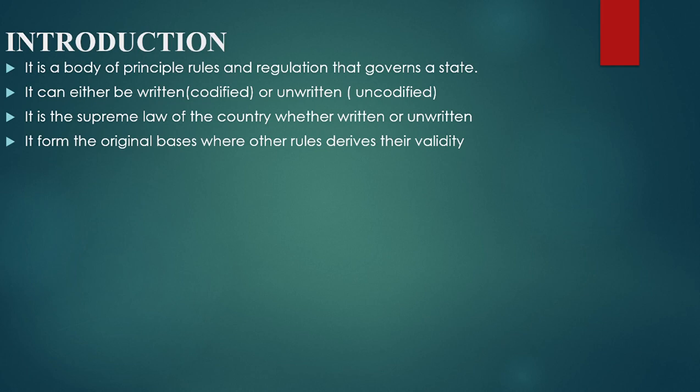A written Constitution is also referred to as a codified type of Constitution, written in a formal document. An unwritten Constitution is a type that is not contained in any formal document — for instance, the Magna Carta in Britain. A written Constitution, for example, is the Kenyan Constitution, which is codified in nature.